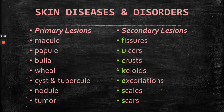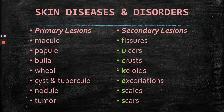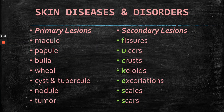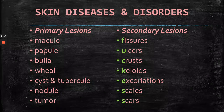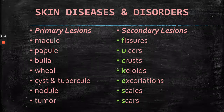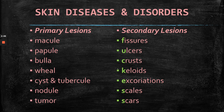Next we have our skin diseases and disorders. On the left we have our primary lesions, which are raised above the surface of the skin: macule, papule, bulla, wheal, cysts, tubercle, nodule, and tumor. Secondary lesions are piles of material on the skin surface: fissures, ulcers, crusts, keloids, excoriations, scales, and scars. The first letters are highlighted because they spell an interesting acronym — when you write them out, you will never forget the secondary lesions.